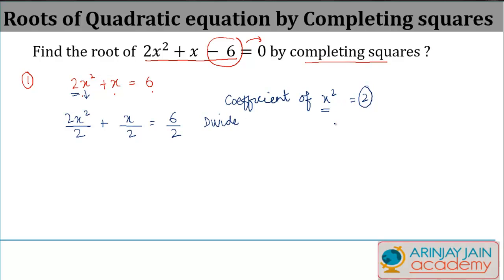I divide all the terms by the coefficient of x². What do I get? This 2 gets knocked off here, and here I get 3. So I'm left with x² + x/2 = 3. Once I reach here, I apply the next step. The next step is we find out what is the coefficient of x. In this case, the coefficient of x is 1/2.